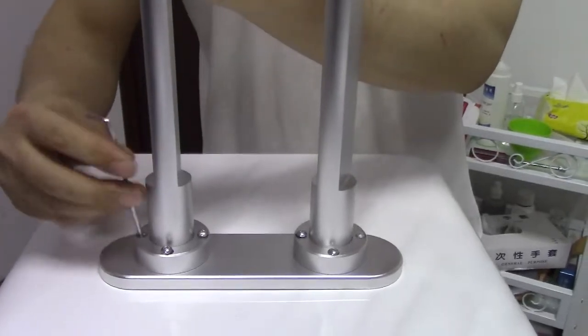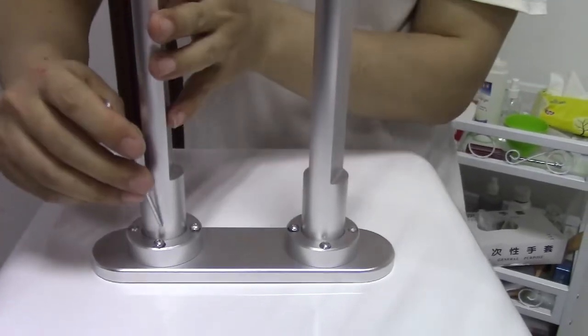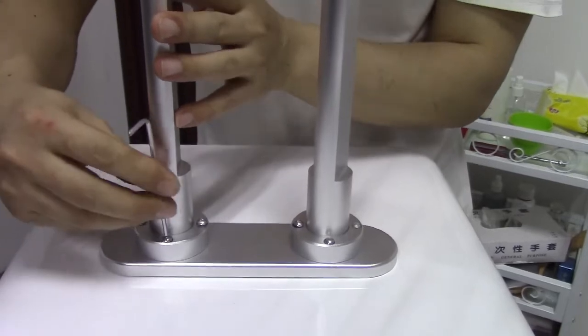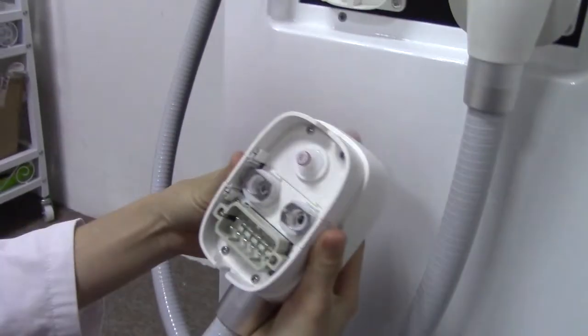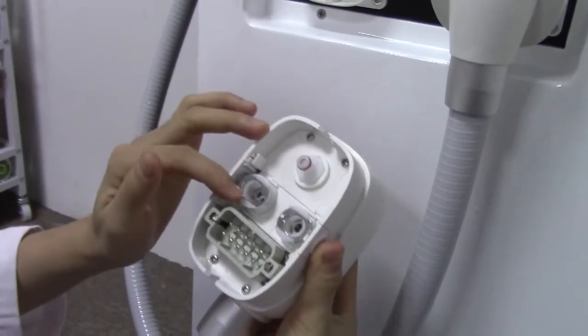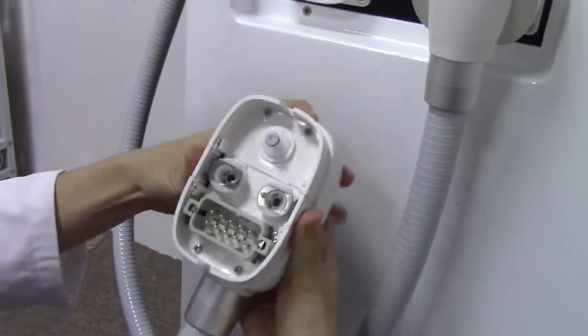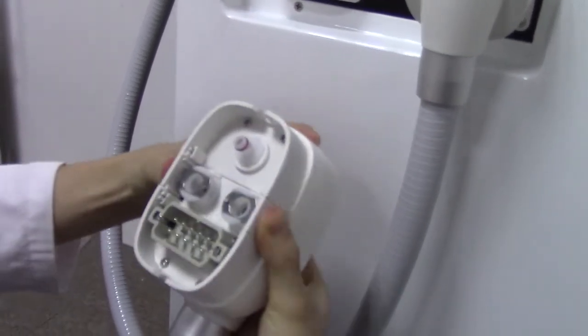Now we install the handle pieces for the machine. Before you install the handle pieces, you have to press these two side buttons.